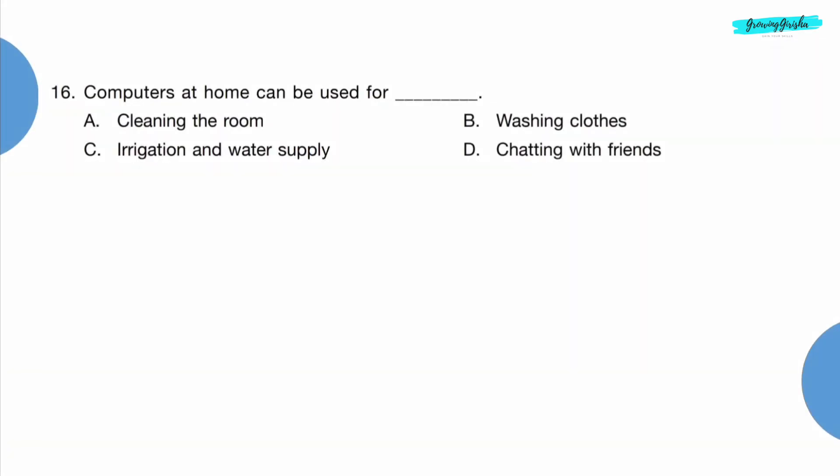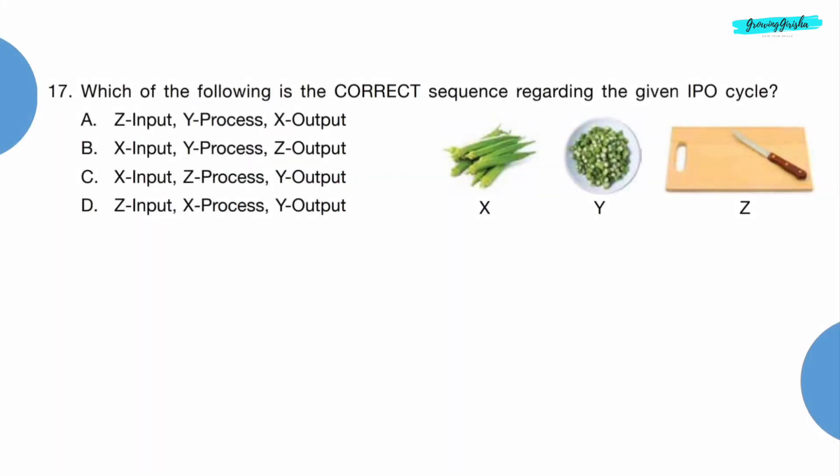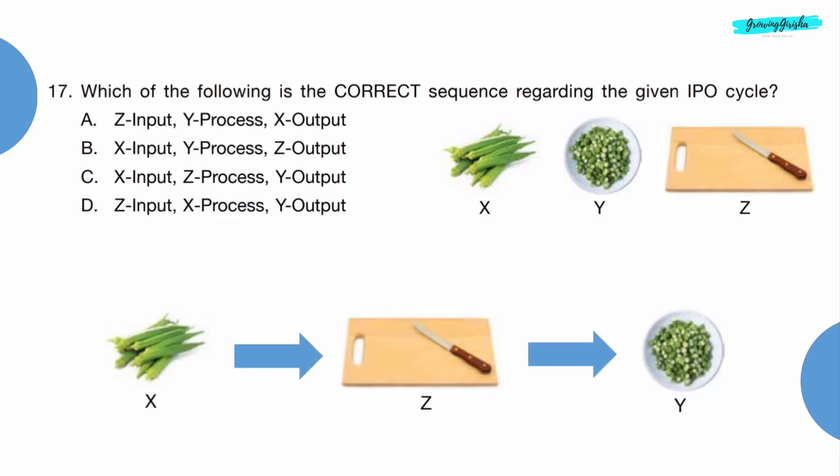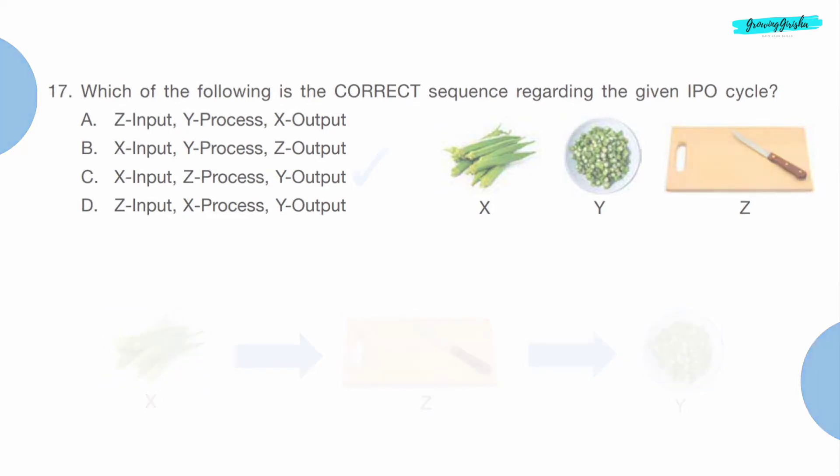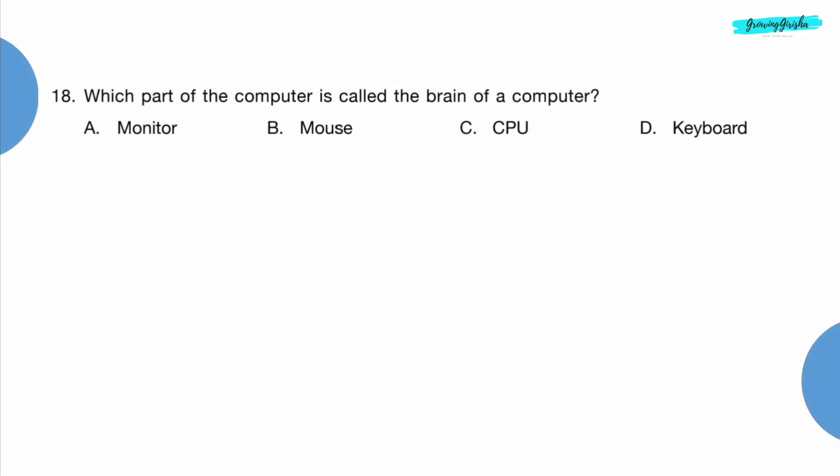Question 16: Computers at home can be used for dash. Option D, chatting with friends. Question 17: Which of the following is the correct sequence regarding the given IPO cycle? Full form of IPO is Input, Process, and Output. Chili is input, cutting it on board is process, and chopped chili in bowl is output. So option C is the correct answer.